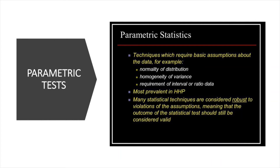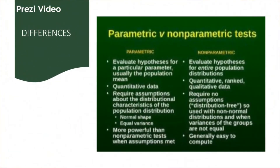Parametric tests are more accurate compared to non-parametric tests. Parametric tests deal with data sets where you have numerous numeric values, whereas in non-parametric tests you deal with arbitrary numbers like ranks in competitive examinations. Parametric tests are more powerful tools because they are based on certain assumptions, whereas non-parametric tests have very limited assumptions. Parametric tests are considered quantitative data analysis, whereas non-parametric tests are considered ranked or qualitative data analysis. Non-parametric tests are easier to compute.